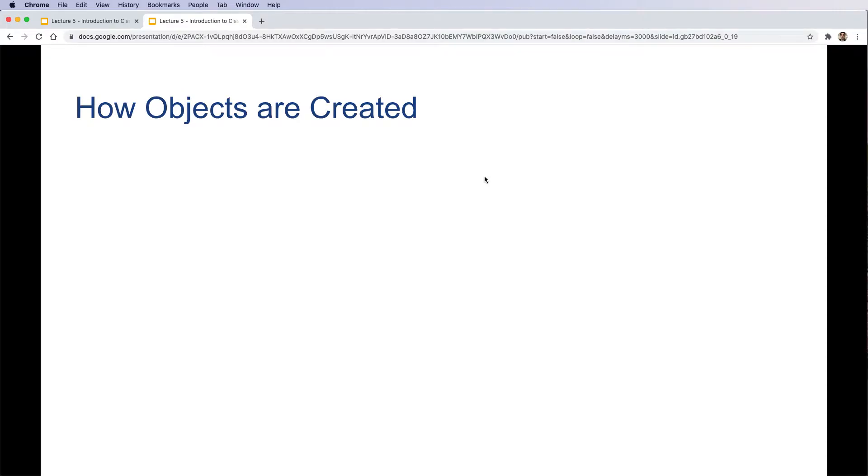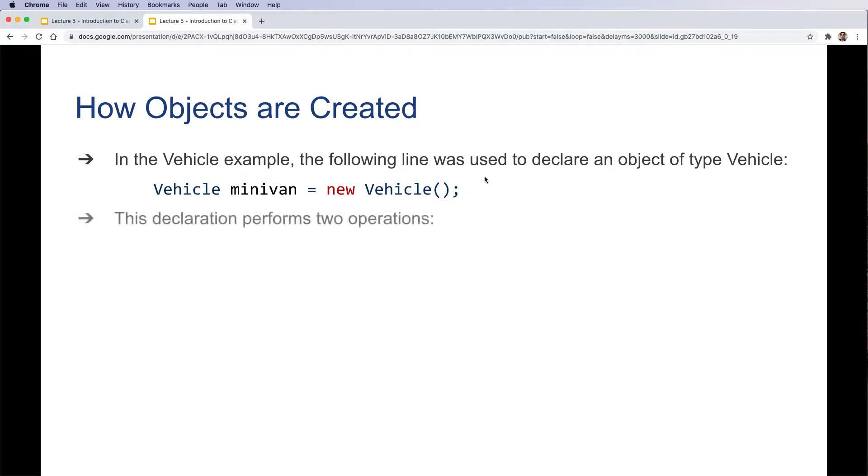How objects are created: in the vehicle example, the following line was used to declare an object of type Vehicle. Vehicle minivan is set to new Vehicle. Let's see what's happening in this line.